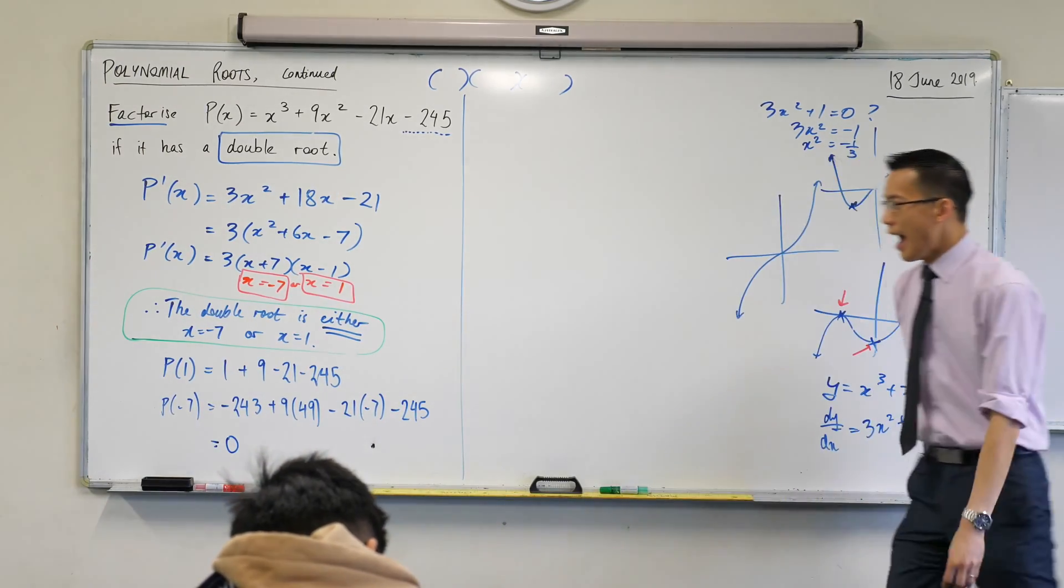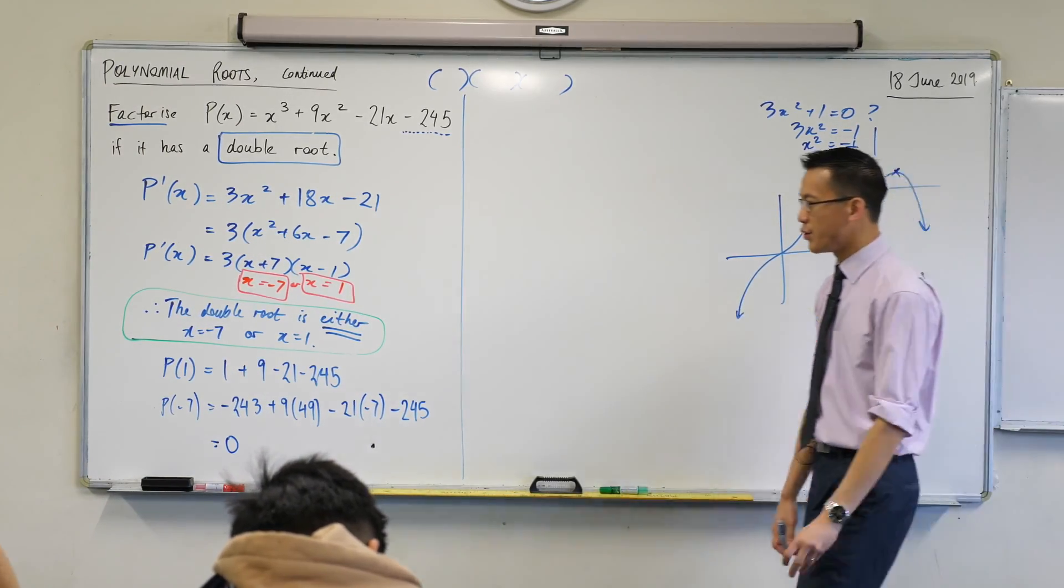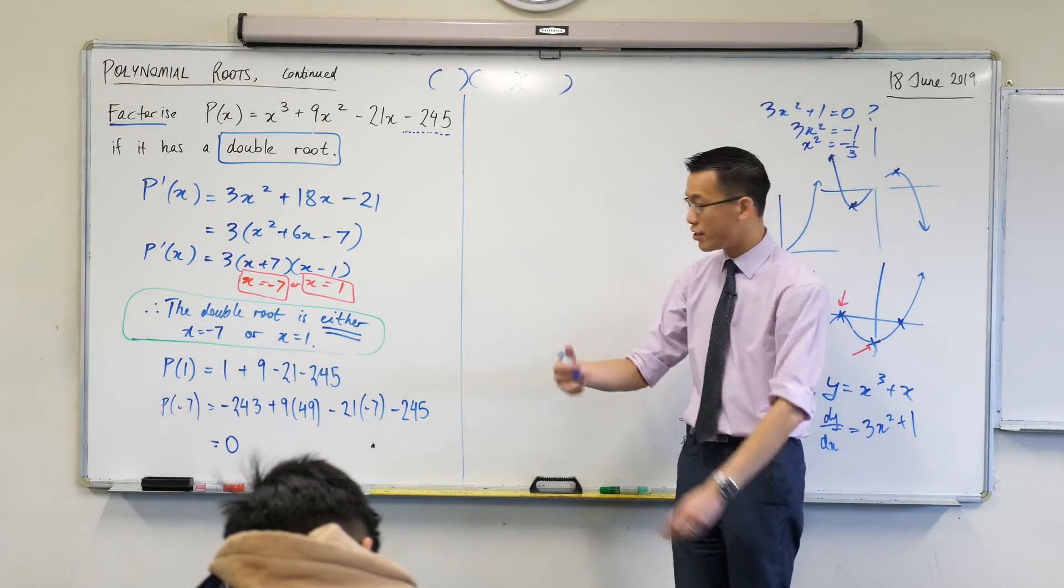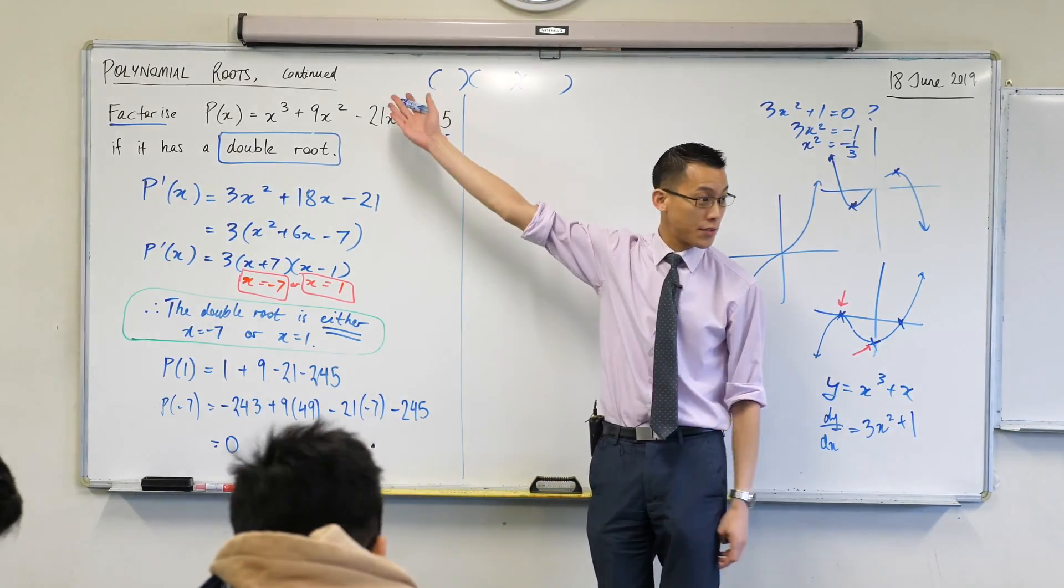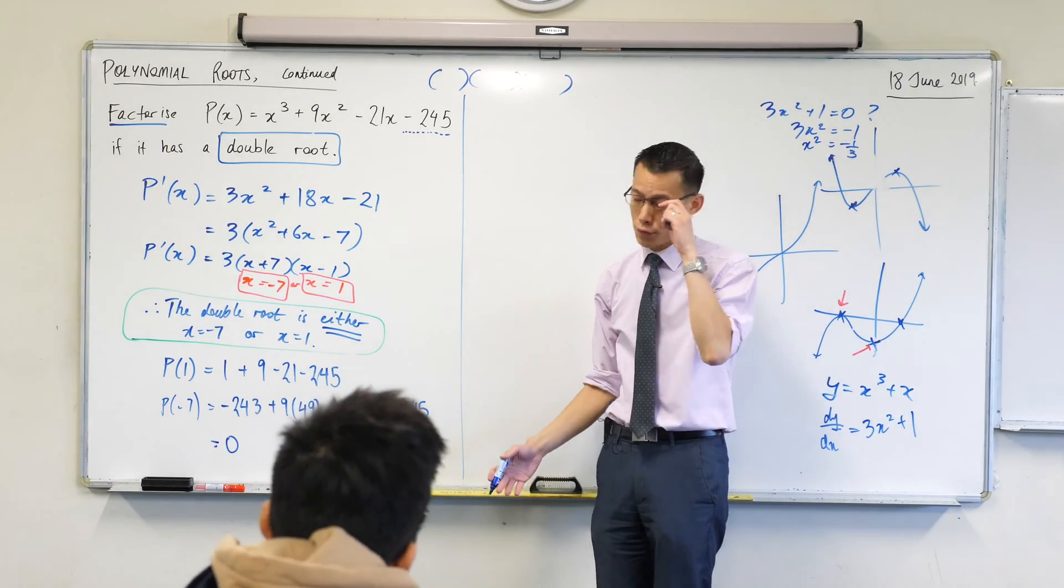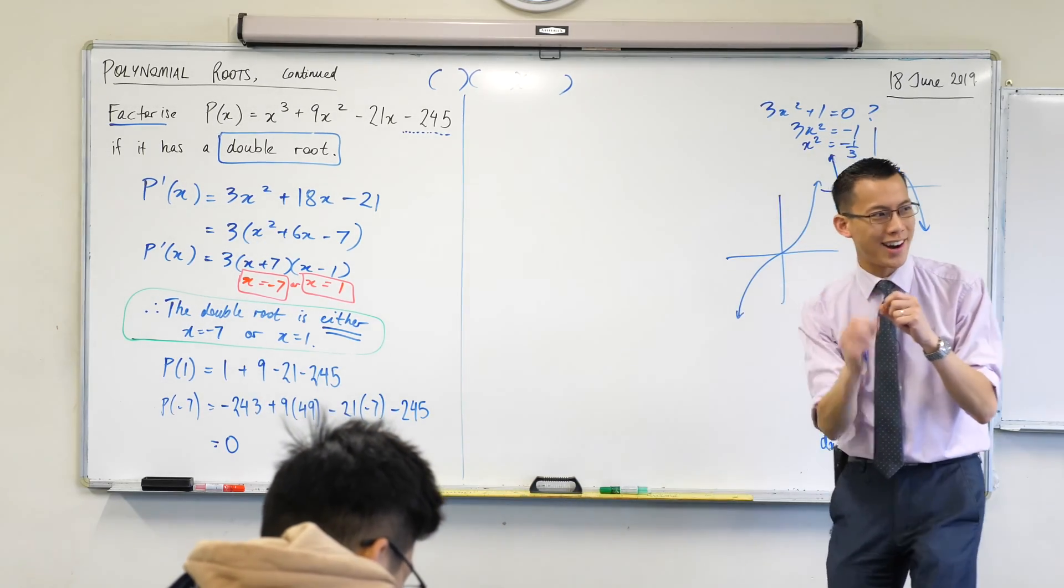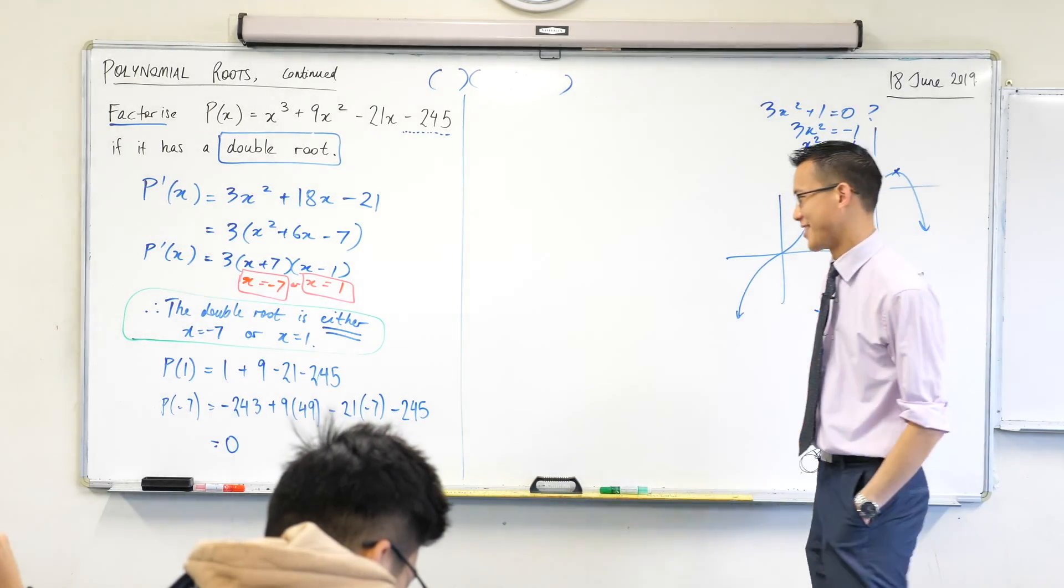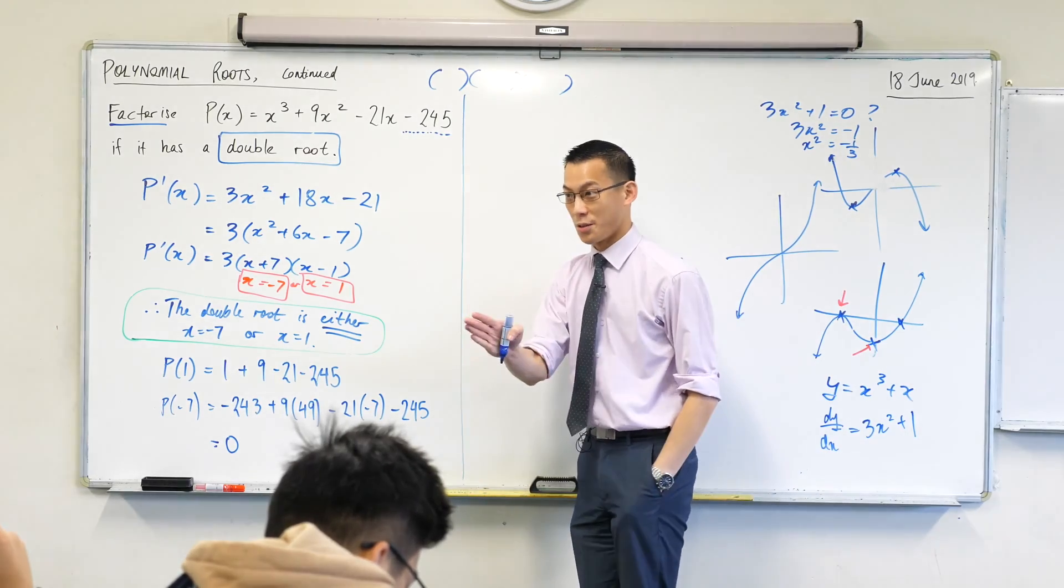Now, at this point here, what you could do is you could go to the factor theorem again to try and find the rest of the factors. That's what the factor theorem is for, after all. But there's a quicker and sneakier way we can do this. We don't need to, right? Think about this.